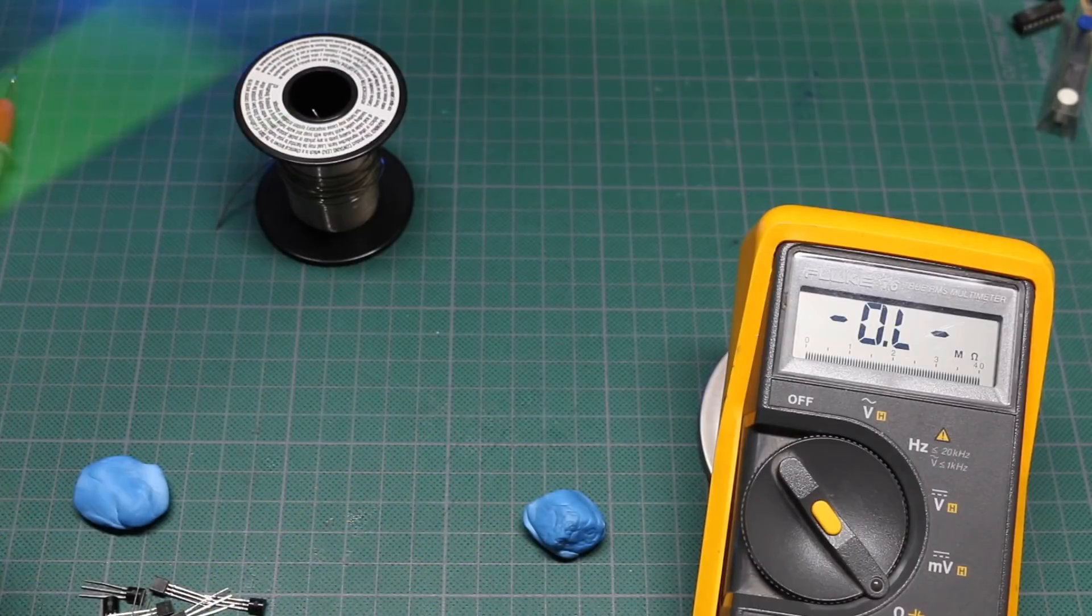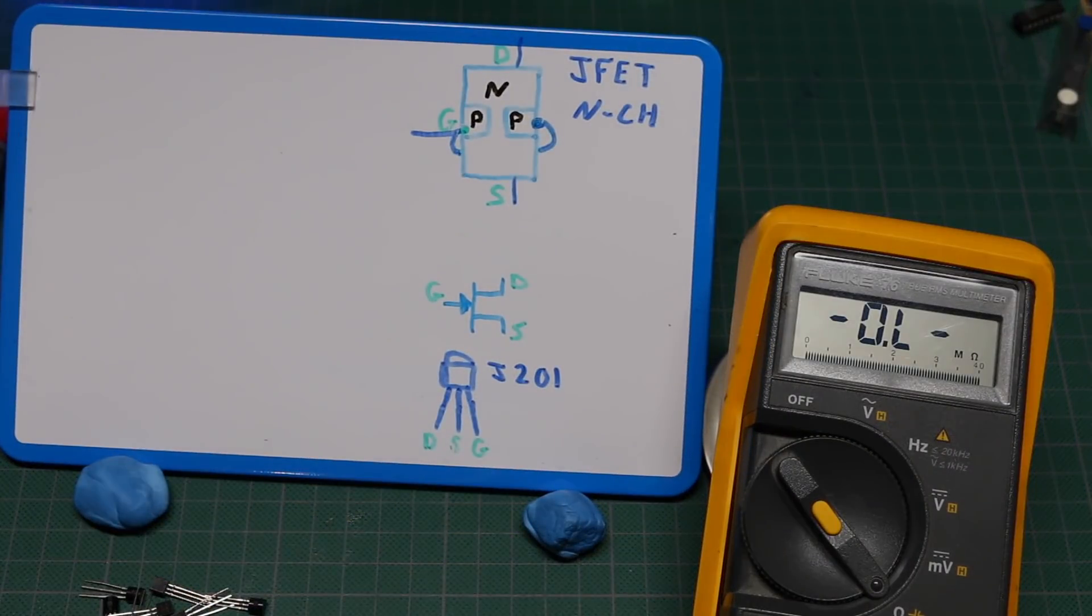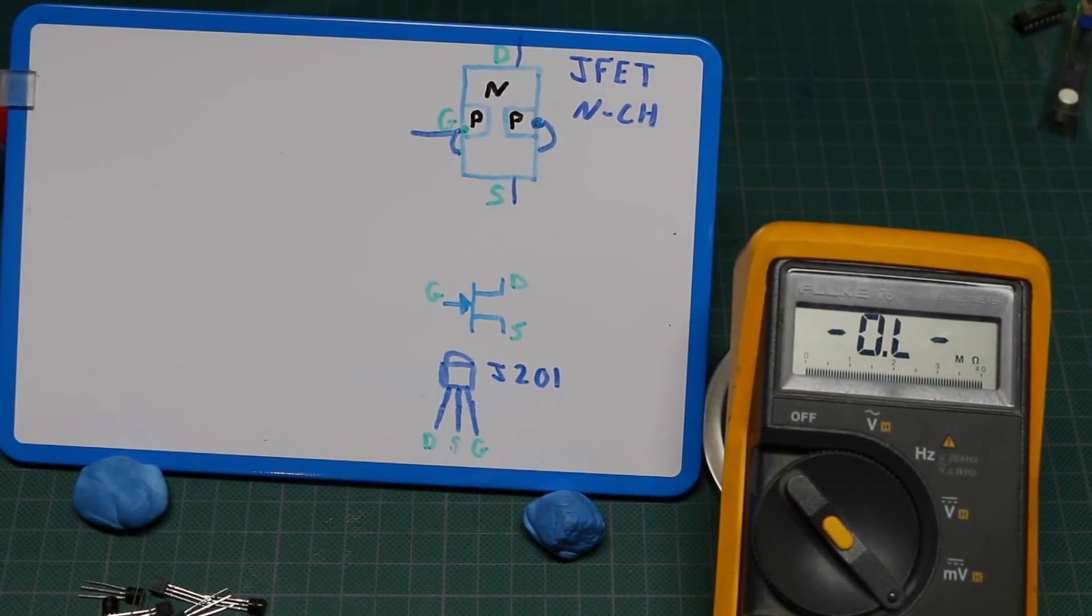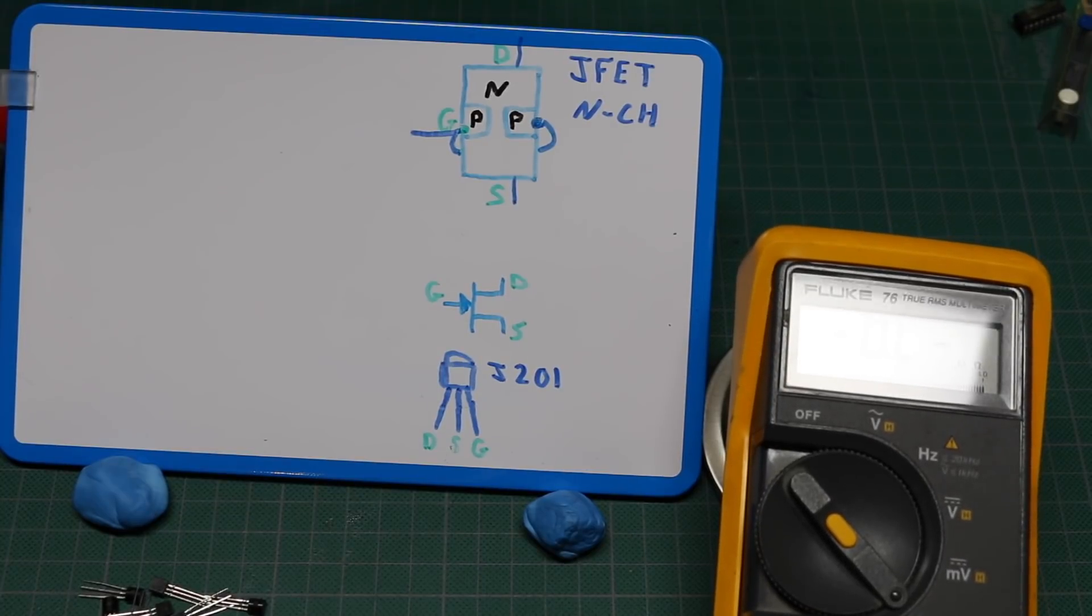Blue tack and a spool of solder. Great whiteboard stand. Brass wool soldering iron tip cleaner. Great meter stand, because otherwise this is what you see.